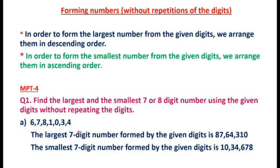We want to find the largest seven-digit number from the given digits. We arrange all the given digits in descending order. So we write 8 at the left-hand side, then 7, 6, 4, 3, 1, 0. The largest seven-digit number becomes eighty-seven lakh sixty-four thousand three hundred and ten.